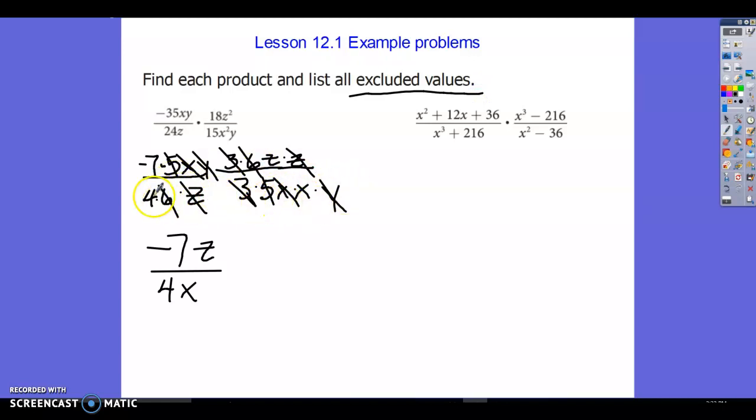So because I have an x, a y, and a z in the denominator, and these are products, meaning multiplication, that means none of these can equal 0. So this is simplified to this expression here, and these are your excluded values, which means your domain cannot have these values in it.